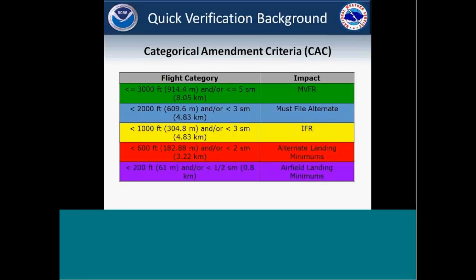Here's a brief look at verification using the critical amendment criteria categories. I'm not going to go into the nitty-gritty, but the main thing is just the color coding, which I use throughout the rest of the slides. This is highlighting our MVFR, must-file alternate IFR, alternate landing minimums, and airfield landing minimums. Just keep those color schemes in mind as we go through these next couple of slides.